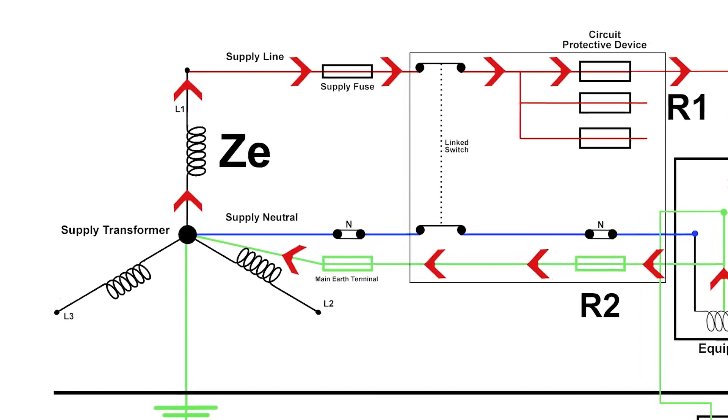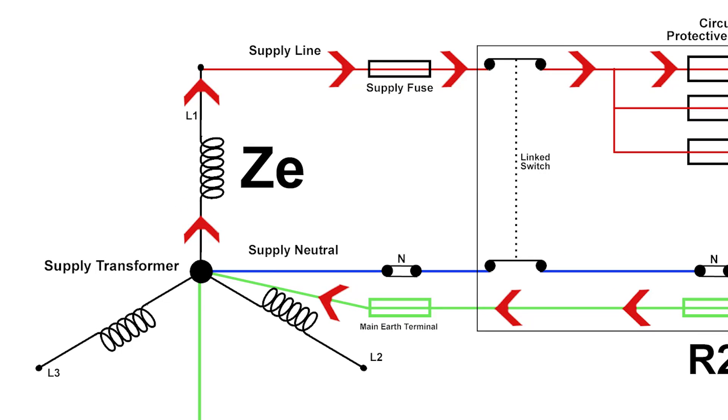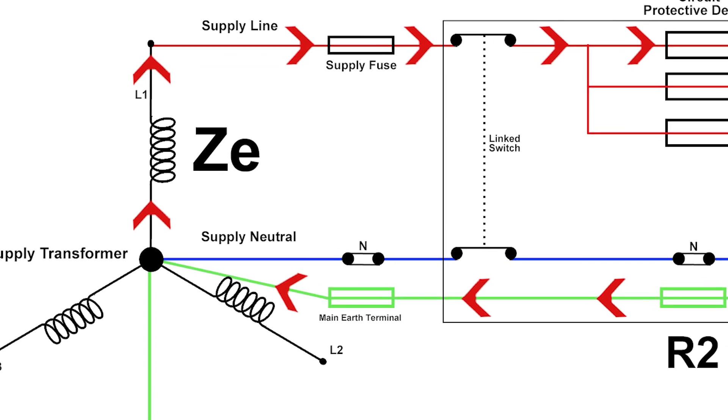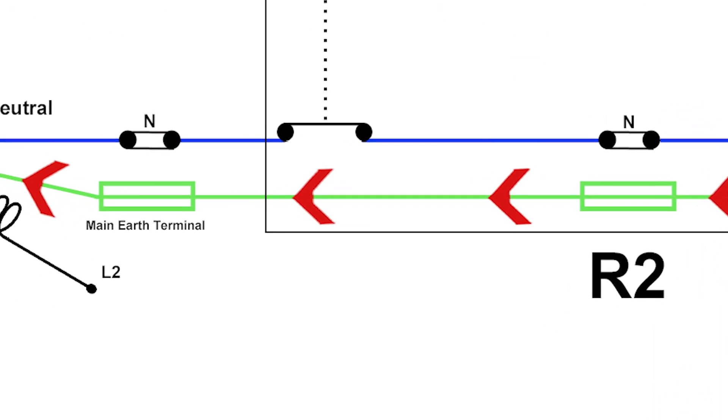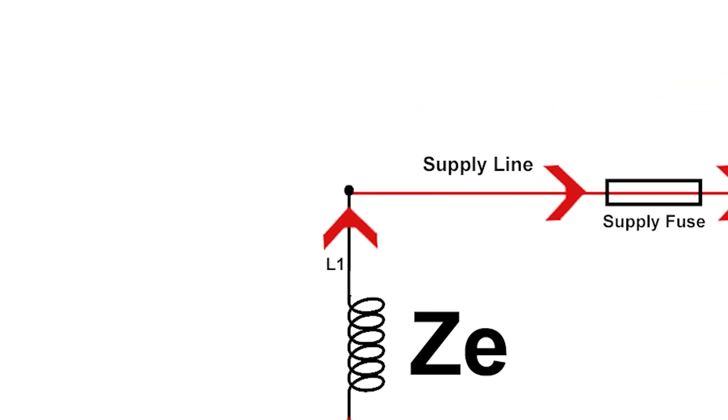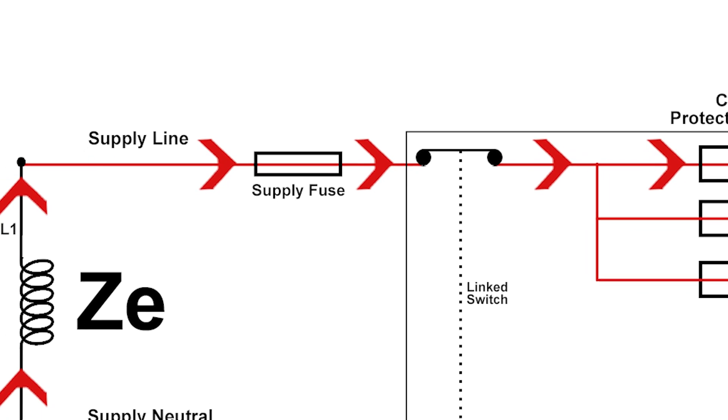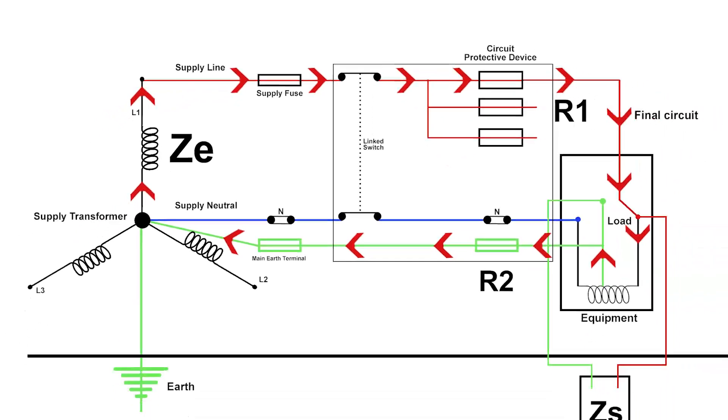Our earthing system is made up of really three components. We've got Ze—the E would be for external, Z is for AC resistance if you like, or impedance. So the resistance of our supply earth and supply line would form our Ze. If we wanted to measure Ze, we would just measure from our disconnected earth at the earth terminal, the main earth terminal, round to our incoming line on our main switch. That would give us Ze, but it's important at that point to disconnect the earth.